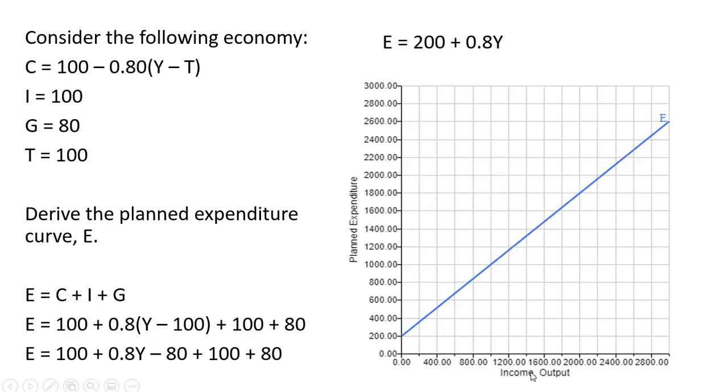And here is the graph. So we've got income and output on the x-axis, planned expenditure on the vertical axis. Once again, the vertical intercept here, where the planned expenditure curve touches the vertical axis is 200, and this has again a slope of 0.8.